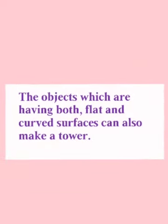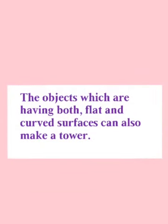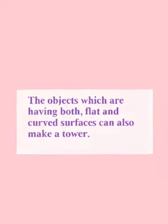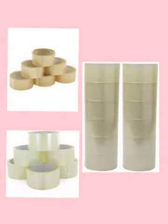It will fall down, as we have tried with potatoes. Remember, the objects which have both flat and curved surfaces can also make a tower. We can make a tower with cello tip because it has both curved and flat surfaces — that's why it rolls and slides also.